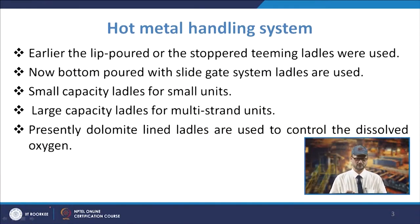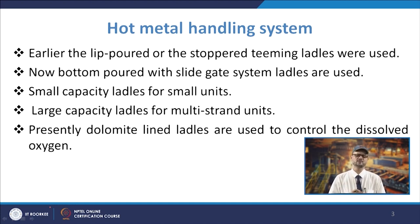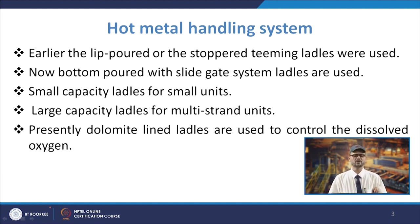Coming to the hot metal handling system — its job is to bring the hot metal and pour it into the tundish. Earlier, lip-poured or stopper-trimming ladles were used, but now in most cases bottom-poured ladles with a slide gate system are used. The metal comes from the bottom and the slide gate controls the flow of liquid metal, allowing it to fall from the ladle into the tundish.